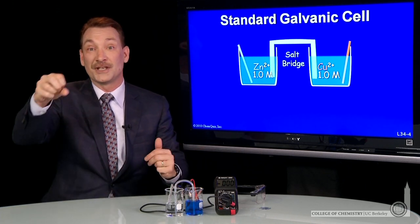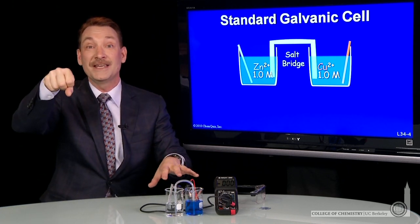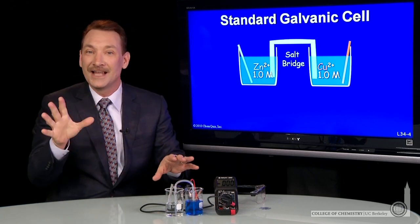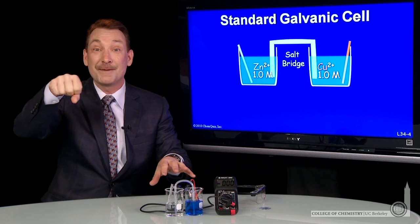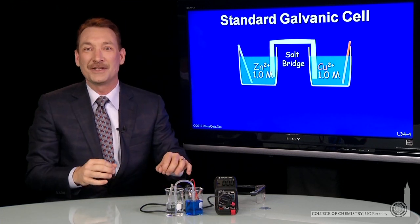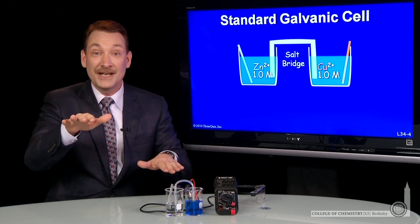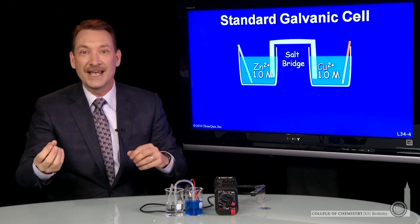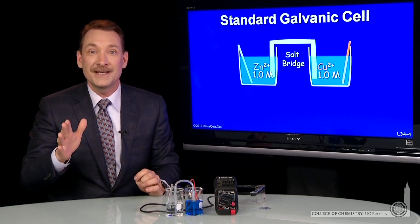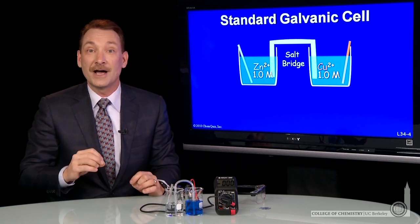You can think of it as a gravitational potential, as a ball on the top of a hill rolls down spontaneously. The electrons are at a high potential and want to flow down to that low potential. So there's an electrical potential between the reducing agent and the oxidizing agent, and that electrical potential exists whether those are in physical contact or not.